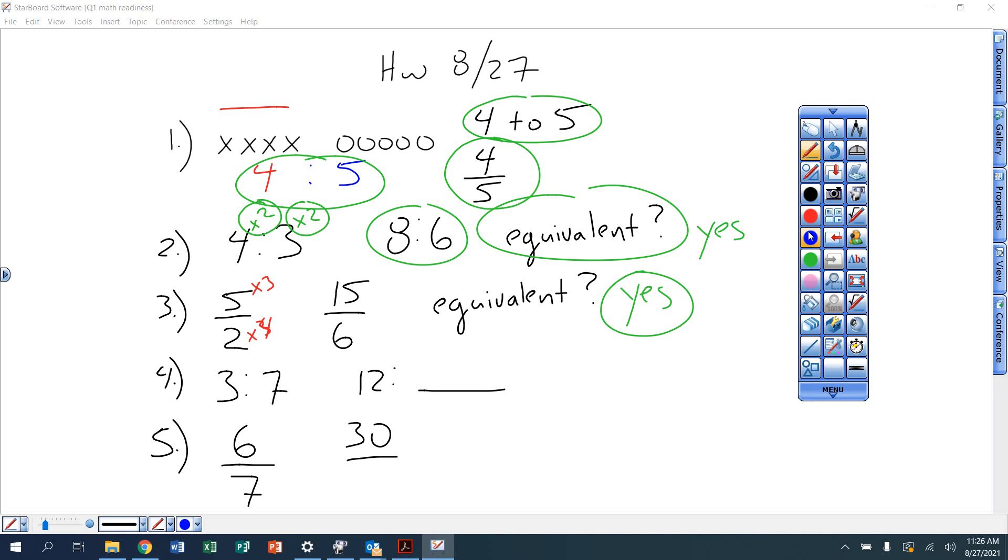The second word is dog. All right, last two where I give you equivalent ratios and I give you the pair and one of the numbers. You need to figure out what you're doing to 3 to get that 12. And once you figure that out, you multiply by 4.